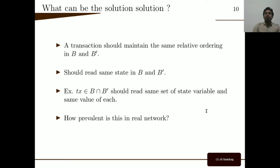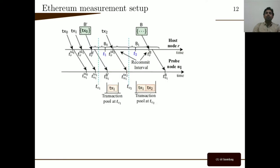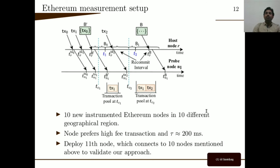The question is: how prevalent is this situation in the real network? To answer this, as part of our first contribution, we performed a measurement study on the production Ethereum network. We used the metric 'similarity' to quantify the overlap between the received block and the potential block. Similarity is the ratio of gas used by transactions that can be skipped during validation of the received block to the total block gas. Gas here is the unit of computation in Ethereum. To perform the measurement, we deployed 10 instrumented nodes in 10 different geographical regions, and also connected an 11th node to validate our approach. Using this setup, we estimated the transaction pool of each miner.